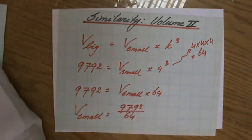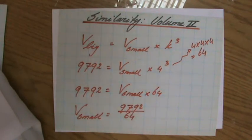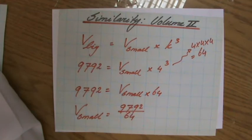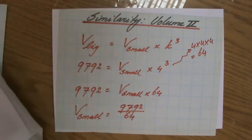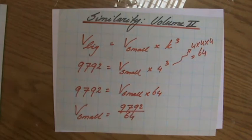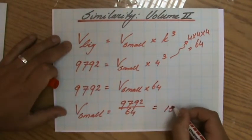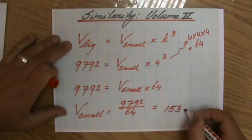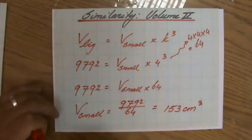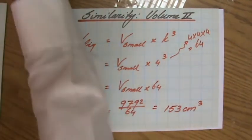So the volume of the small cuboid is 9,792 divided by 64 — simple algebraic rearranging. I'm grabbing my calculator. 9,792 divided by 64 — I'm estimating about 153. And that's not too bad: 153 centimeters cubed. Finished.